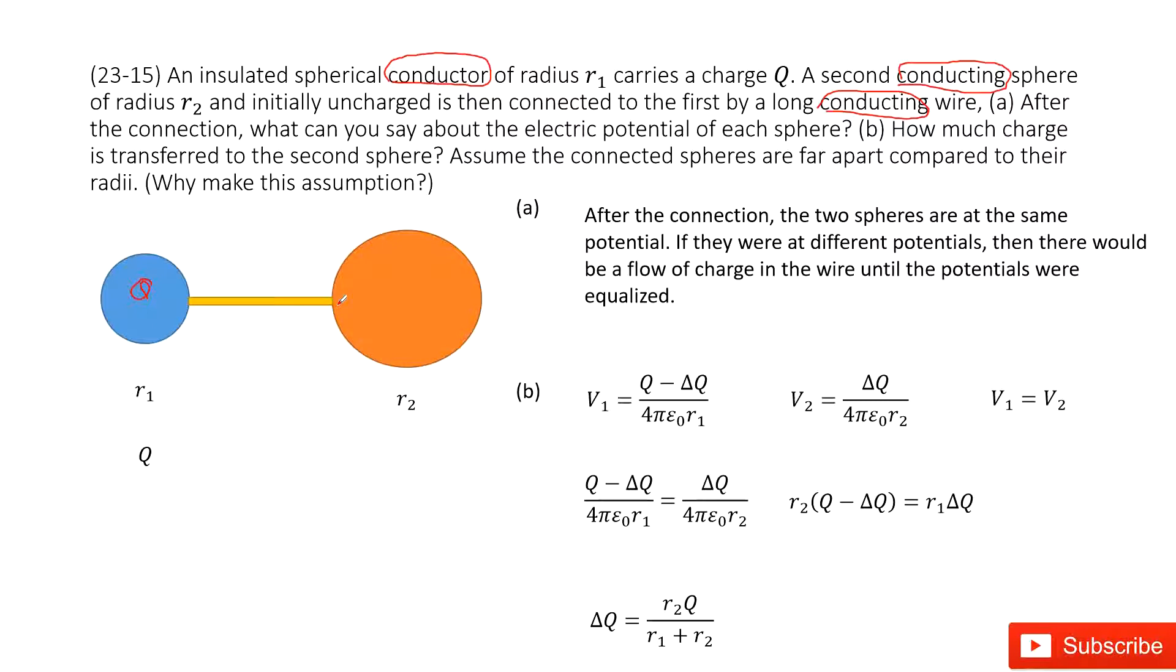After the connection, what can you say about the electrical potential of each spherical object? In this case, as we talked about for conductors, the electric potential equals at the surface.